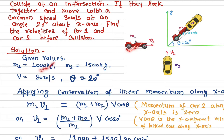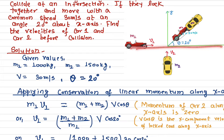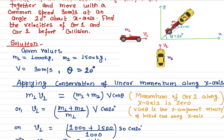The mass of car one is 1000 kilograms and the mass of car two is 1500 kilograms. After the collision both move together locked at 30 meters per second at an angle of 20 degrees with respect to the first car's direction. We now apply conservation of linear momentum.